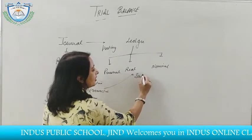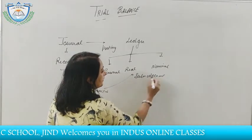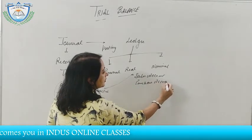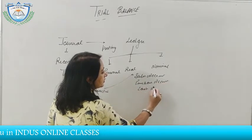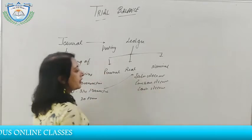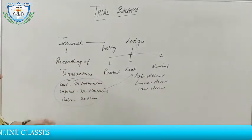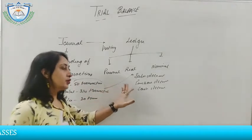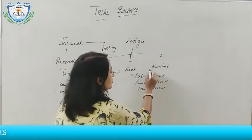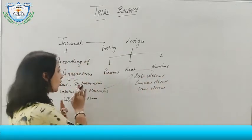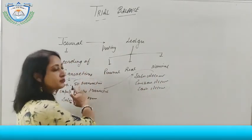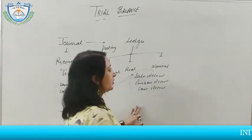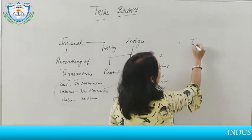Under the ledger, you can say we have a sale account, purchase account, and cash account as single accounts. Even if there were 50 cash transactions in the journal, under the ledger we make a single account, and all transactions are posted from journal to ledger. After ledger, we prepare the trial balance.